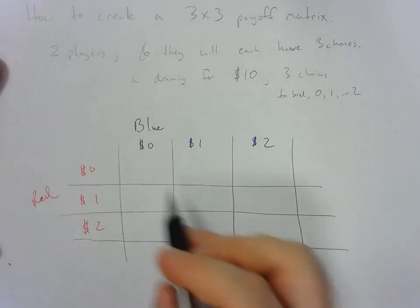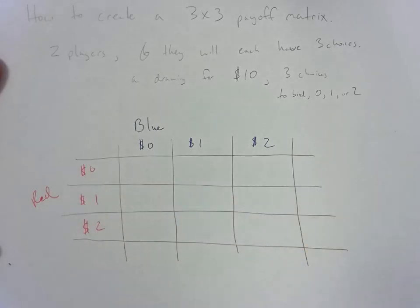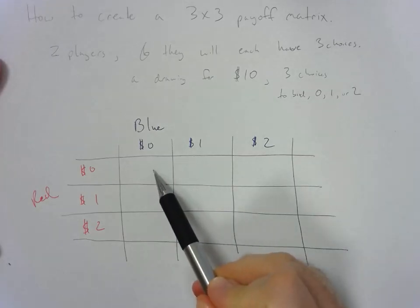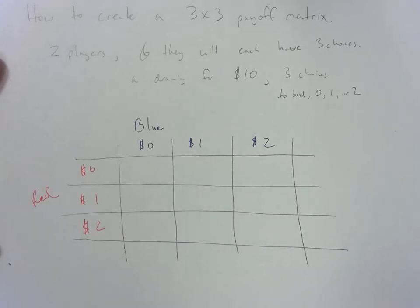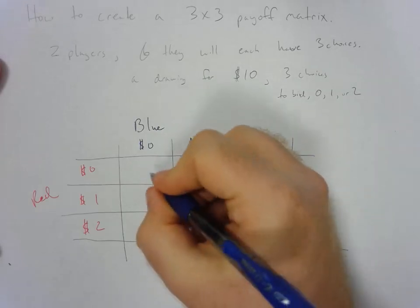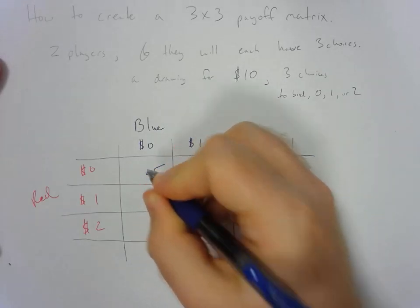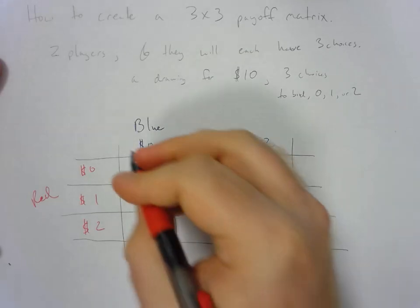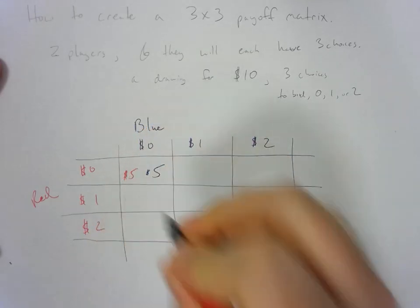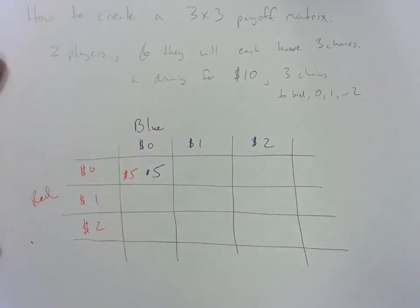First let's imagine if they both end up bidding zero. Well what's going to happen? They're going to split the pot. So blue is going to get $5 and red is going to get $5. That's pretty cool.